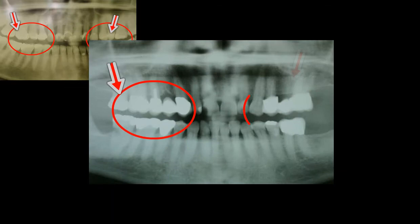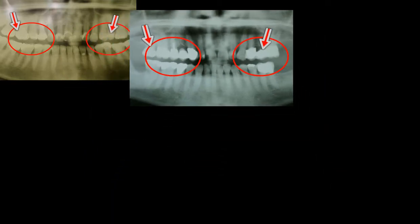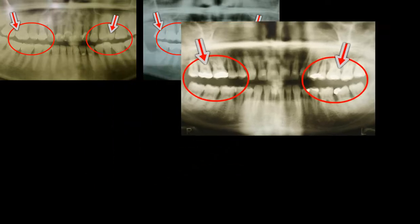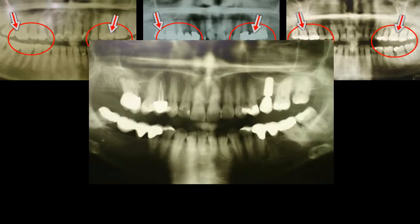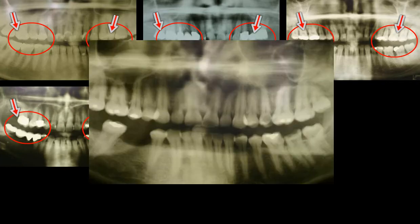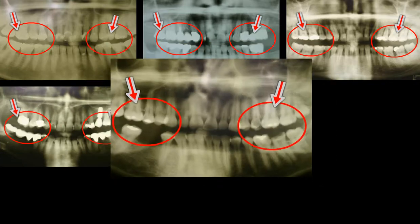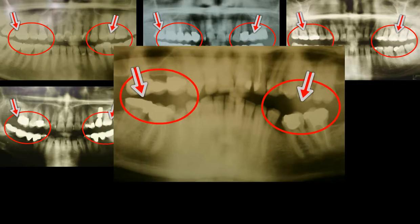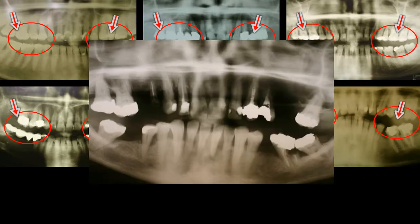Here you see various patients' x-rays — the white spots or fillings. Do you notice that all of these patients, and presumably you as well, only have so-called bad teeth in the posterior region? On all of these images, even a layman can recognize that people get fillings, crowns, bridges, etc. in the posterior region first.